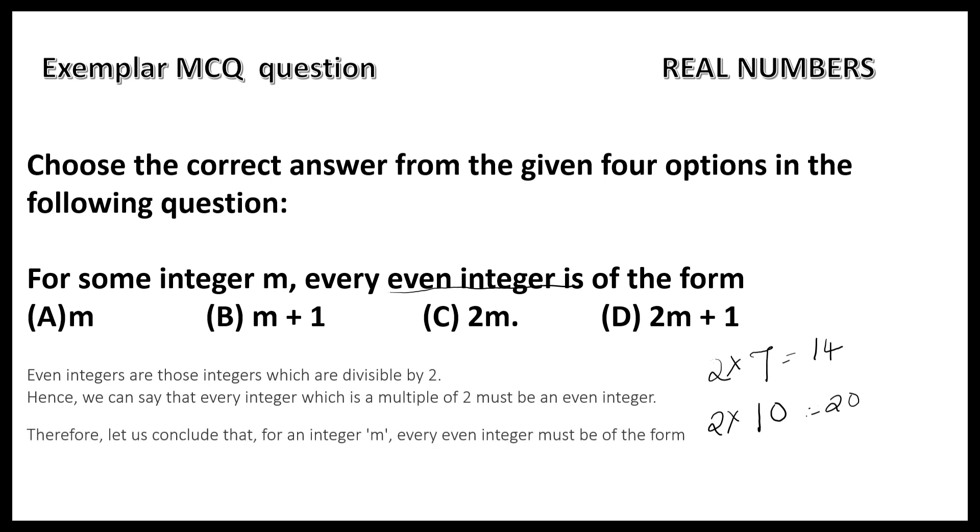So, let us conclude that for an integer m, every even integer is of the form 2 × m, that is 2m, so option C is correct.